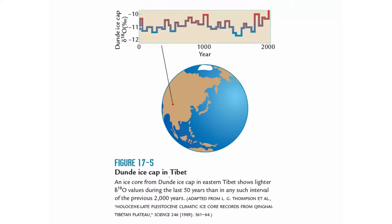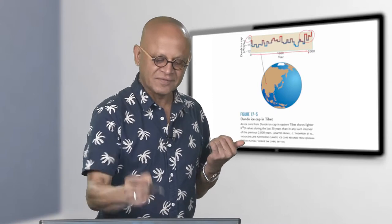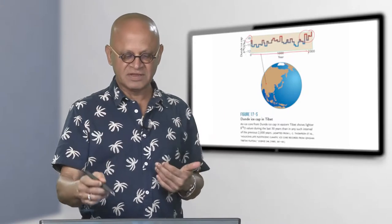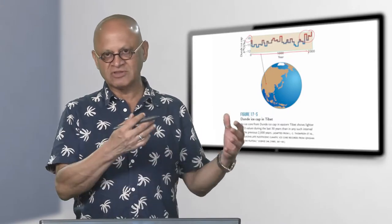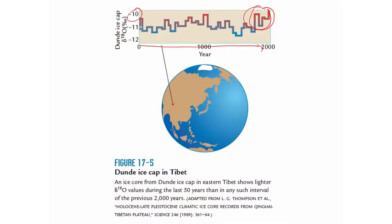Looking at the Dundee ice cap and going from the beginning of the common era from year 0, for the first time in this 2000-year period, the delta O18 has remained very high. To get used to the scale: when delta O18 is depleted, as it begins to get more O18 that means you are melting ice and reducing evaporation. It has been high for a 50-year period that has never happened in the last 2000 years.